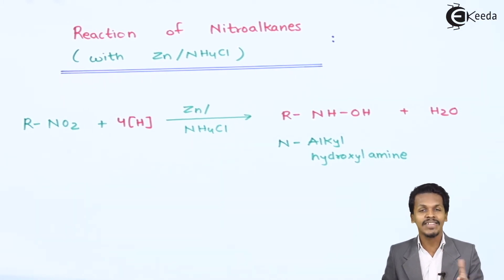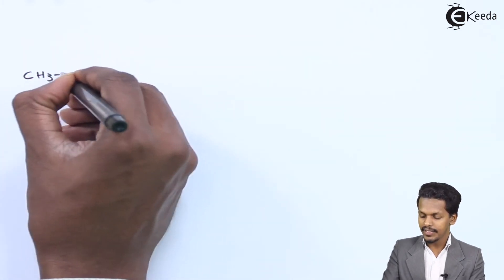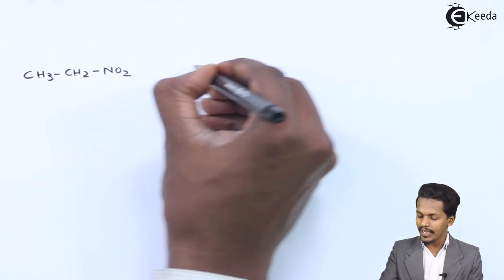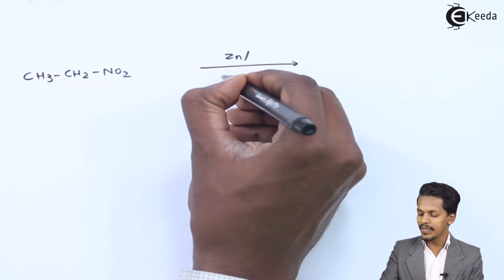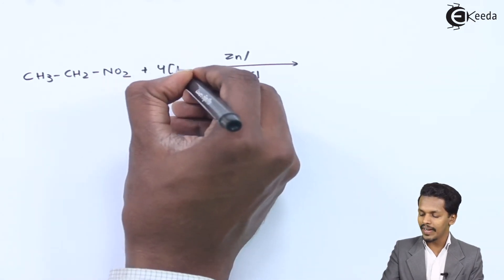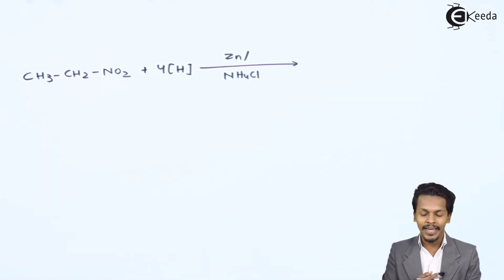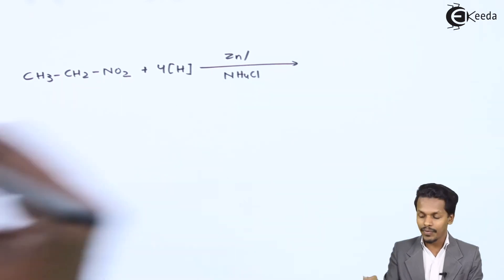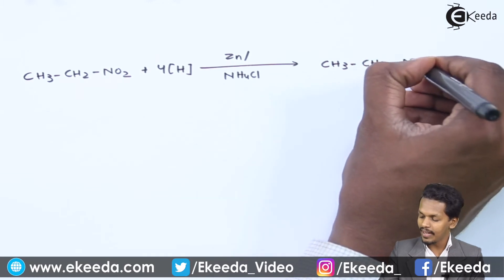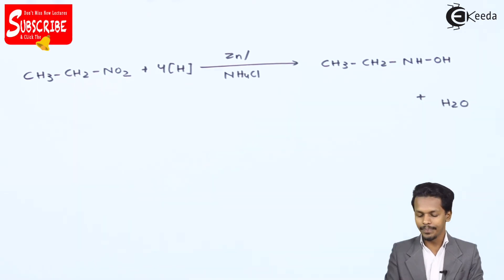For example, consider CH3CH2NO2, which is nitroethane. When this nitroalkane reacts with zinc in presence of NH4Cl, four moles of nascent hydrogen are produced, which convert the NO2 group into a hydroxylamine group. The product is CH3CH2NHOH, along with water as the byproduct.